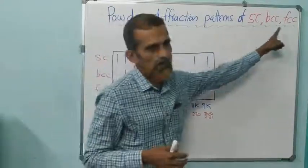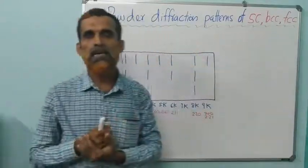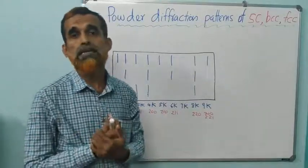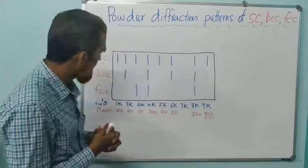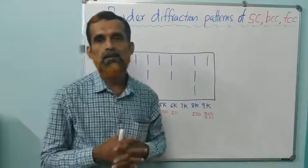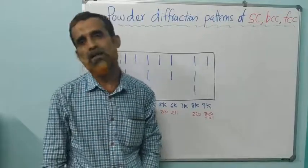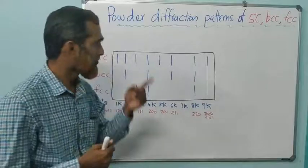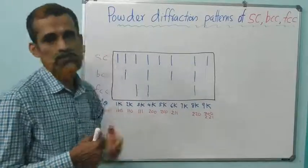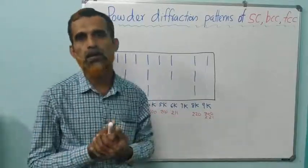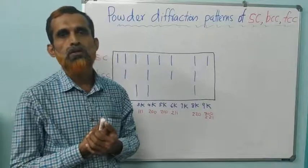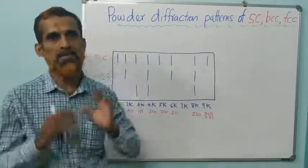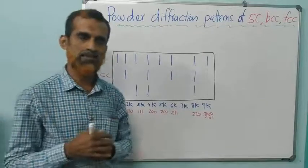We consider the three different types of cubic lattices and see how the powder diffraction pattern differs. How do we do the analysis of powder diffraction pattern? That means how we relate each reflection, each line to each plane — which line corresponds to which plane. That is the analysis.